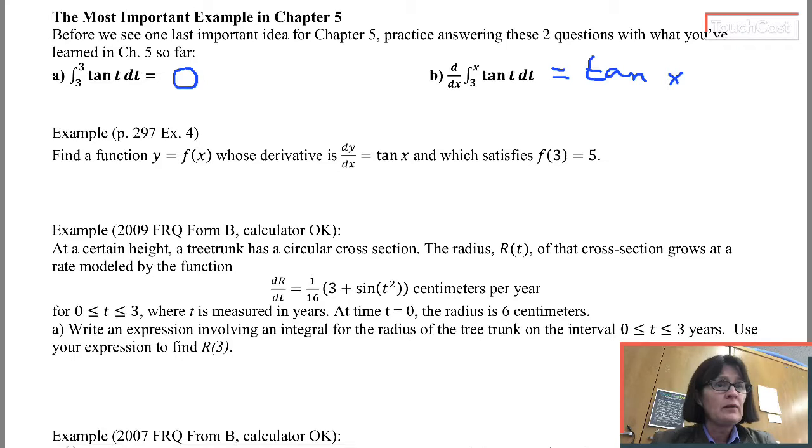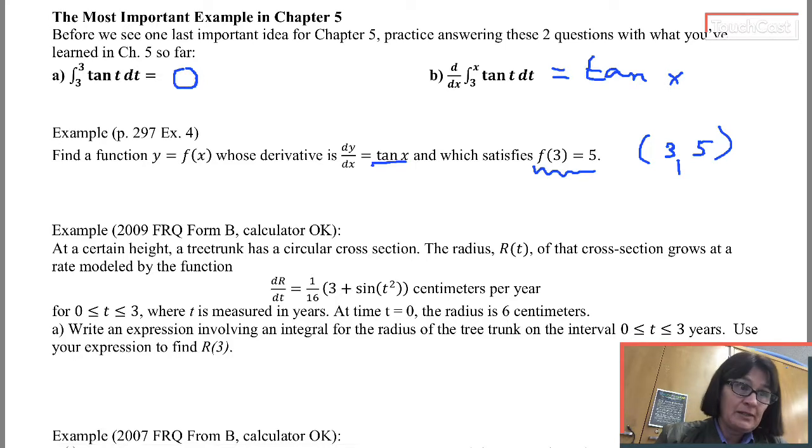If I want to find, if I want to write a function whose derivative is tangent x, and I know this one ordered pair, I know 3 comma 5 - I know when x is 3, y is supposed to be 5 - I can write a function that contains an integral. And even if I don't know an antiderivative for tangent off the top of my head, there is one, but none of us knows it off the top of our head, it's just a little bit of work. I'm still going to be able to write a function that meets these two criteria.